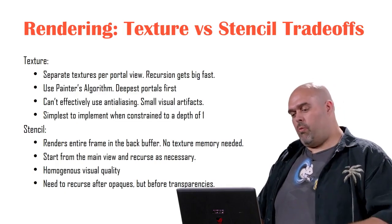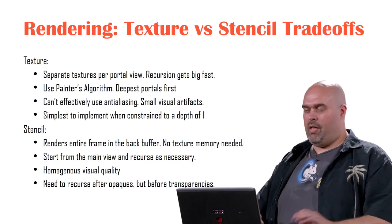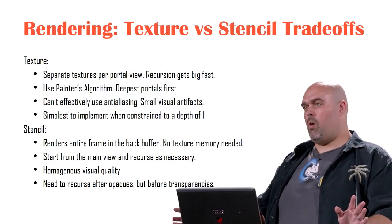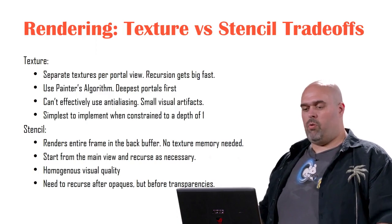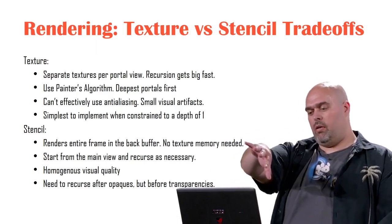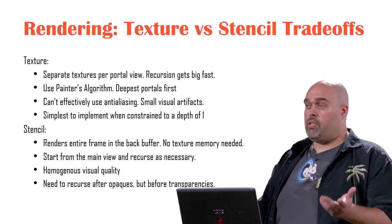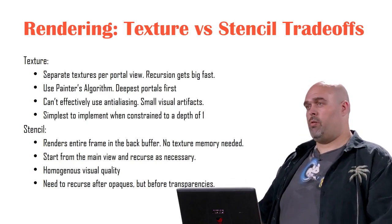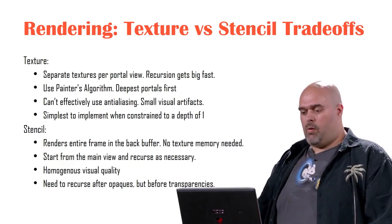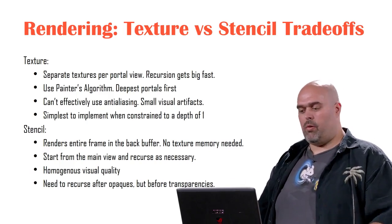By contrast, when we render with stencils, it renders the entire frame to the back buffer — no extra texture memory requirements, all done in a single pass. Starting from the main view and working your way in, you have to nest it a little bit. You're guaranteed to get homogeneous visual quality because it's a single pass the same way you're rendering the rest of your frame. But it has a lot of extra complexity in when and how you render portals.